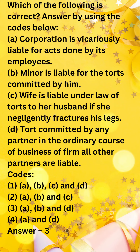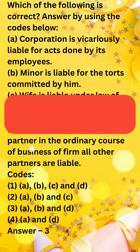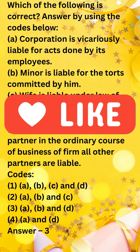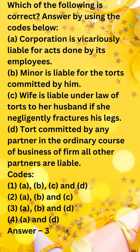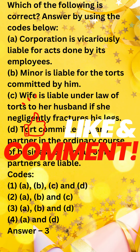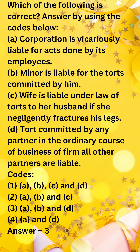Which of the following is correct? Answer by using the codes below. A. Corporation is vicariously liable for acts done by its employees. B. Minor is liable for the torts committed by him. C. Wife is liable under law of torts to her husband if she negligently fractures his legs. D. Tort committed by any partner in the ordinary course of business of a firm — all other partners are liable.